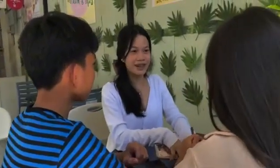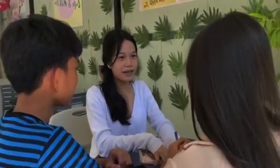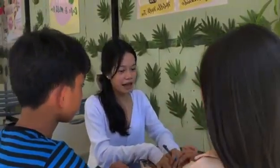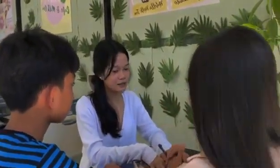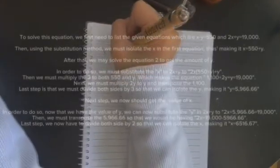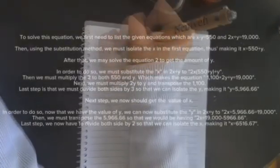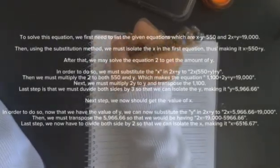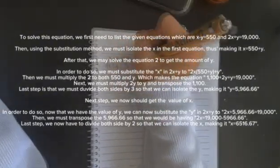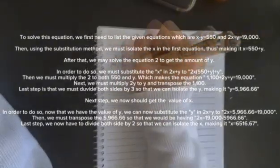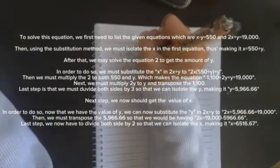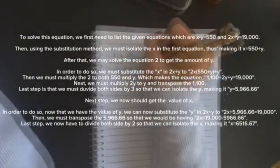Okay, let's break it down step by step. If we solve this, we might just unlock the tickets. To solve this equation, we first need to list the given equations, which are: x minus y equals 550, and 2x plus y equals 19,000.